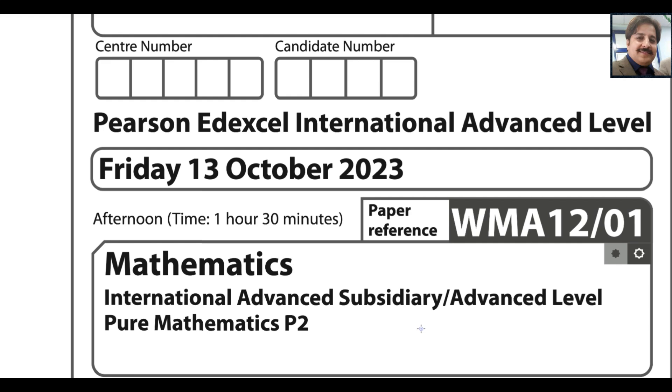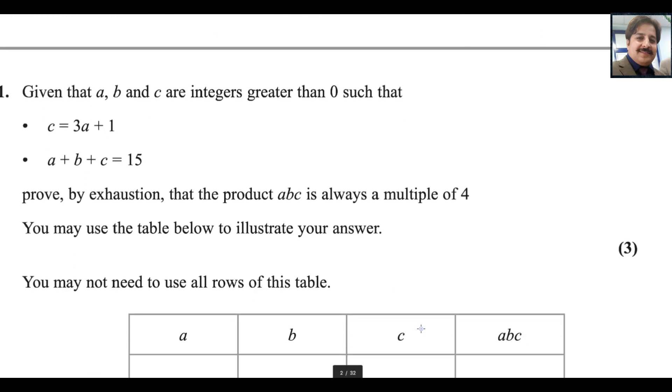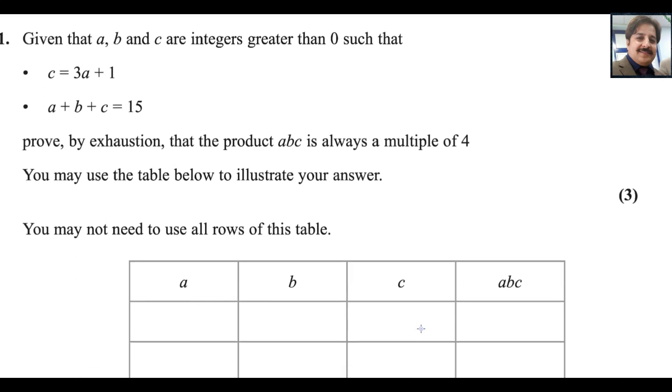Let us start with question number one. Question number one is worth three marks. Given that a, b and c are integers greater than zero such that c equals 3a plus 1, and a plus b plus c equals 15, prove by exhaustion that the product abc is always a multiple of four. You may use the table below to illustrate your answer.